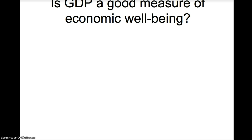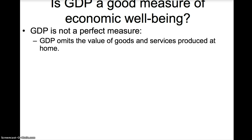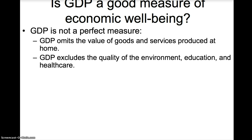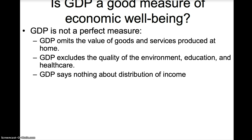GDP is not a perfect measure of economic well-being. GDP omits the value of goods and services produced at home — only goods and services produced and sold in legal markets are counted, so anything produced at home does not get accounted for. GDP also excludes the quality of the environment, education, and health care. When we talk about the well-being of a country, the quality of the environment, the availability of education, and access to health care should be considered; however, GDP does not tell us anything about the quality of those factors.